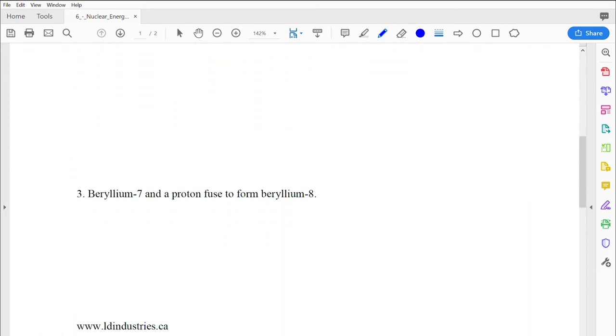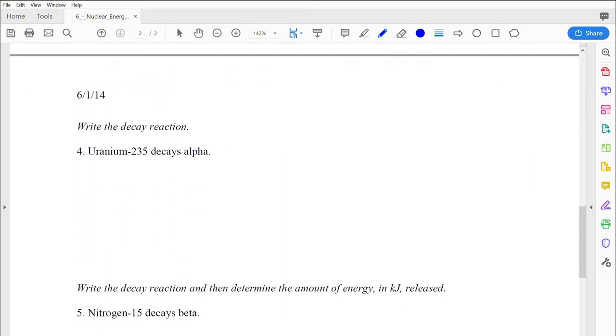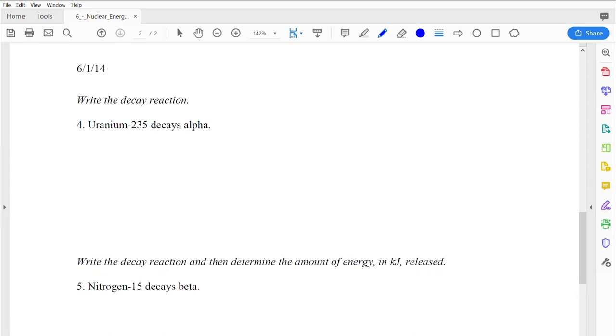Let's take a look at the second page where we're writing a nuclear decay reaction. And then we'll do one more problem. Maybe we'll do four and five. So here's a review of just writing a nuclear reaction. We're going to do uranium-235.